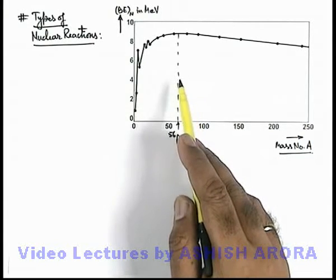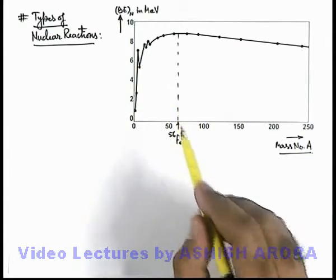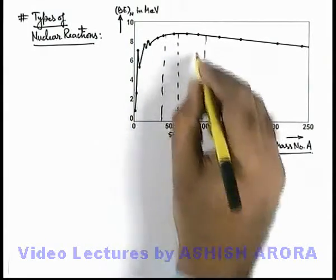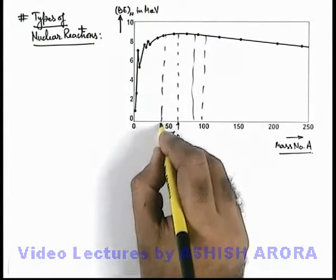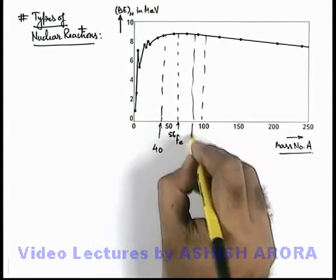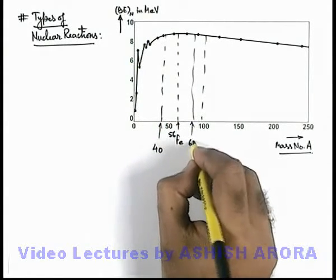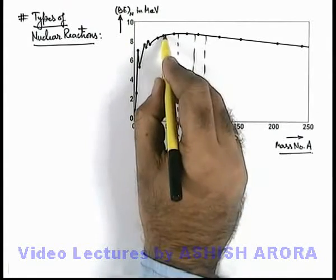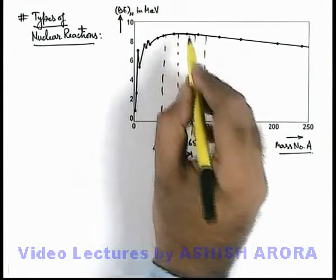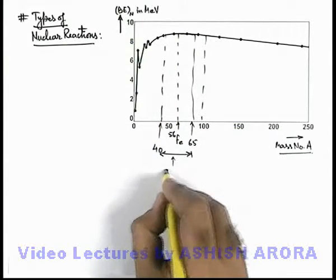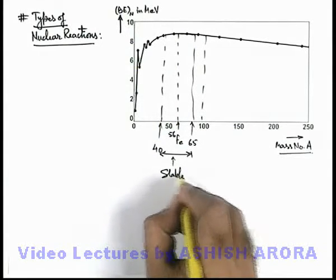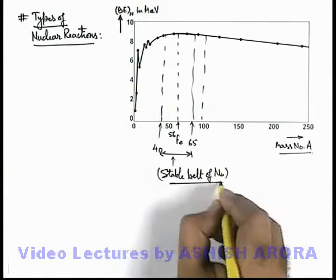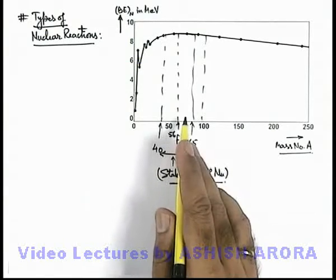Now in this situation, if we just have a look in the neighborhood of this iron nuclei, in the range where we can see approximately from mass number 40 to somewhere around mass number 60 or 65, this is a region where we can see the binding energy per nucleon is maximum. So this is the region which we can call as the stable belt of nuclei.